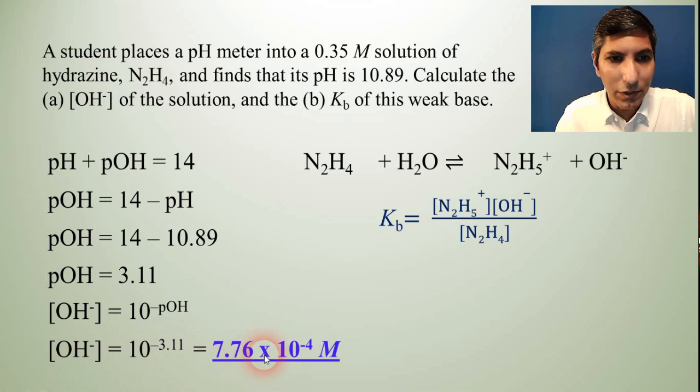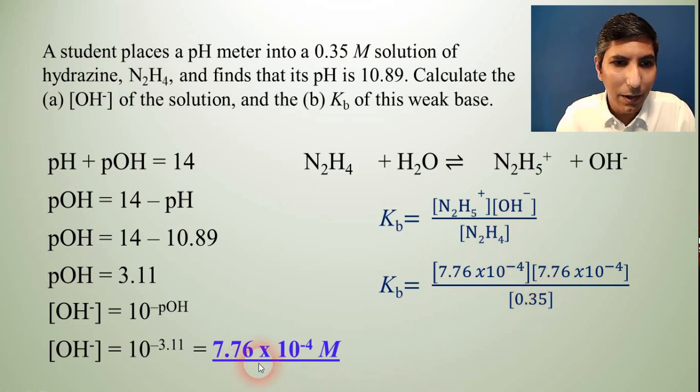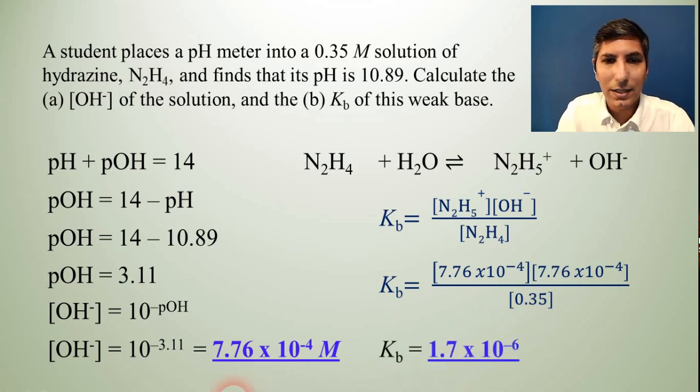And so now we can plug some numbers into that equation to solve for Kb. Now we have our hydroxide concentration because we just solved for that so we can plug that in. And we have to remember that the N2H5+ concentration is the same because it's a one to one mole ratio in the equation. And in the denominator the N2H4 concentration is 0.35. Now it's actually 0.35 minus the hydroxide concentration but this really doesn't affect our math much. So I'm just going to leave it as it is. And our Kb value is 1.7 × 10^-6. So that's how we can solve for a Kb.